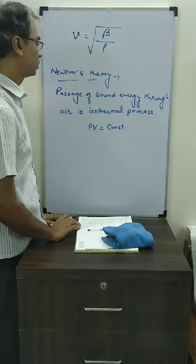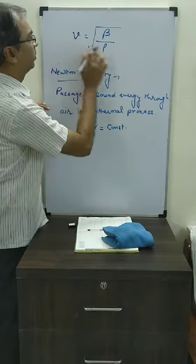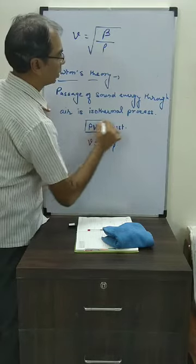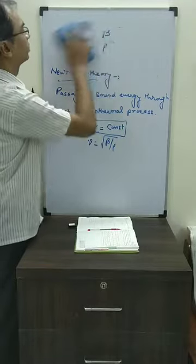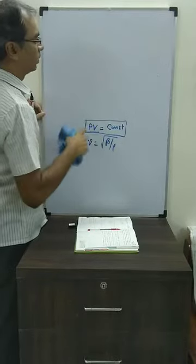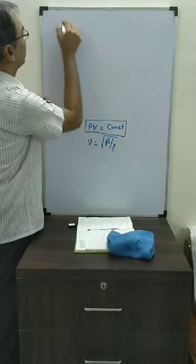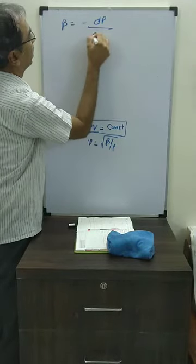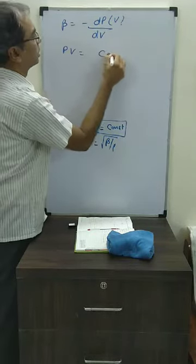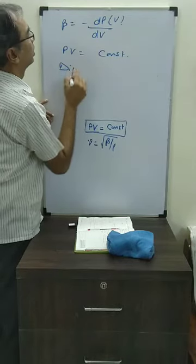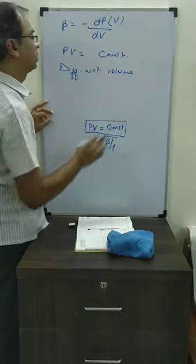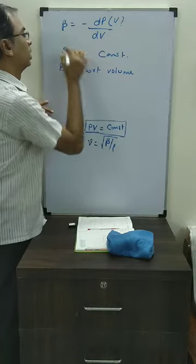Now if PV is constant and velocity is given as root over beta by rho, what we can conclude from here? Because beta value is minus dP by dV divided by V, we can find that value from PV equals constant as well. We can differentiate this equation with respect to volume.